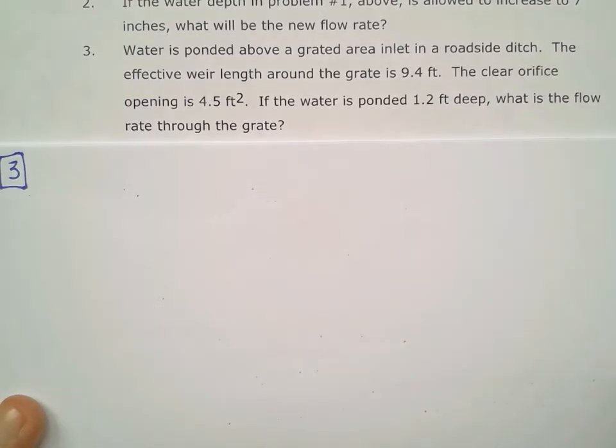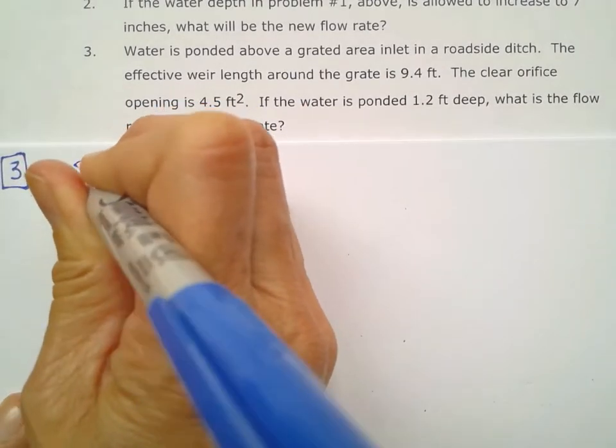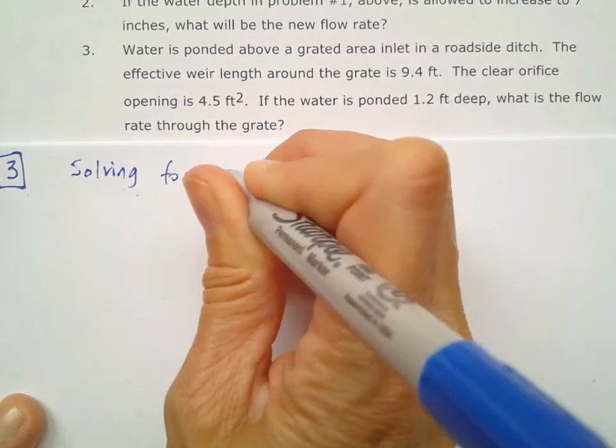So we're given information as if this is an orifice or a weir. With that ponding, I usually think orifice, so I'm going to start off solving for my orifice. But I'll also solve for weir as well.